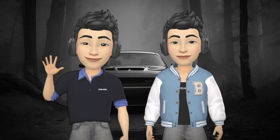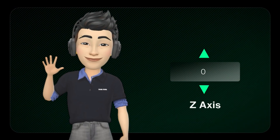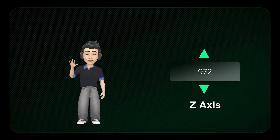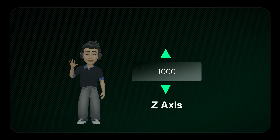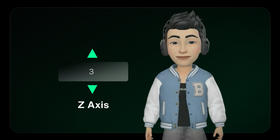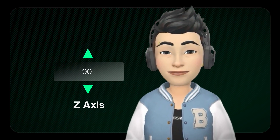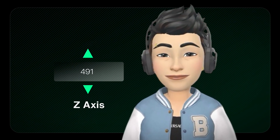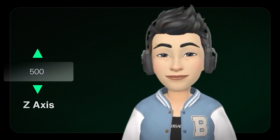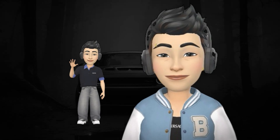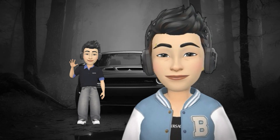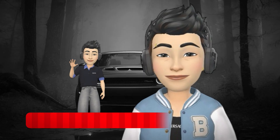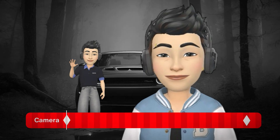Let's create a 3D effect using the Z axis value. For example, if you reduce the Z axis value of the first image to minus 1000 and increase the Z axis value of the second image to plus 500, there is now a clear depth difference between the two images.